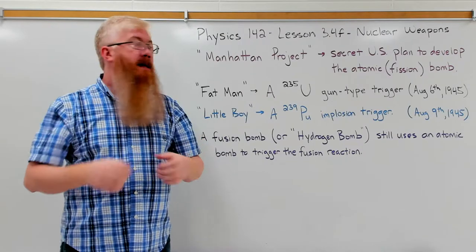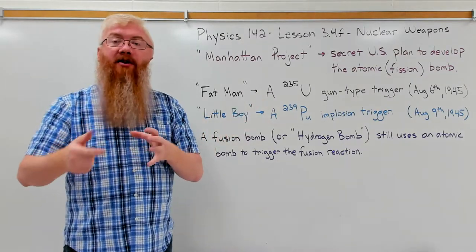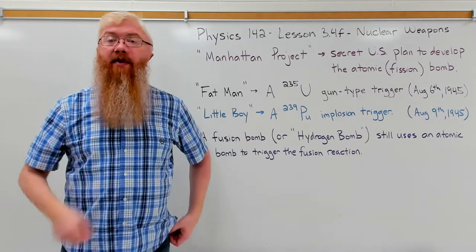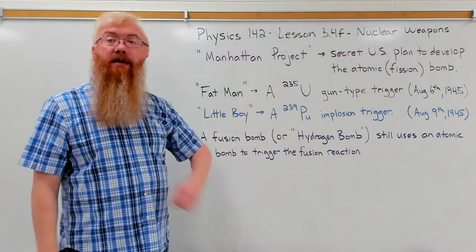Explosives were placed around it in such a way that when those chemical explosives were detonated, it compressed the plutonium into a smaller volume. The same amount of plutonium in a smaller volume exceeded the density necessary for criticality. It went supercritical and exploded.